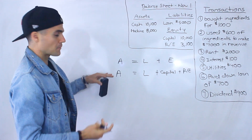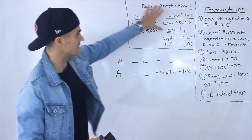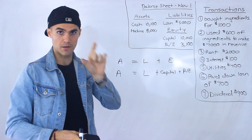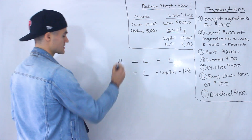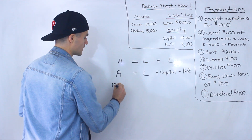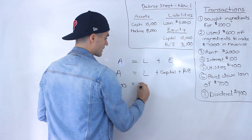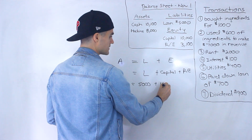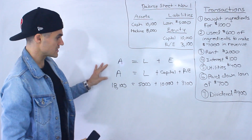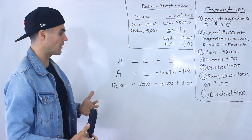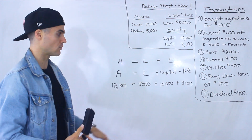Notice that from here, remember a balance sheet is a snapshot of the company at a specific point in time. So we can take this information on the balance sheet — which is a snapshot at November 1st — and fill in this equation. The assets are $18,100 (cash plus machine), liabilities are a loan of $5,000, capital is $10,000, and retained earnings is $3,100. Notice the right side adds up to $18,100, balancing the left side.